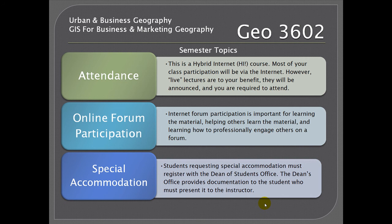Students requesting special accommodation must first register with the Dean of Students Office. The Dean of Students Office then provides the documentation to the student, who then must present that documentation to me along with the nature of the special accommodation.